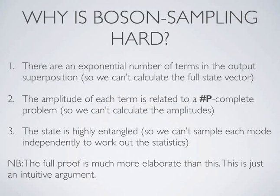So why is boson sampling hard? The full proof is very complex — it's a 100-page paper — so I'll give three intuitive reasons. The first is that there are an exponentially large number of terms in the output superposition, meaning we can't explicitly calculate the full state vector on a classical computer. But that alone is not sufficient — there are quantum systems with exponentially large Hilbert spaces that are still classically easy to simulate, such as tensor networks and circuits consisting only of Clifford gates, as given by the Gottesman-Knill theorem. So this is a necessary but not sufficient condition.